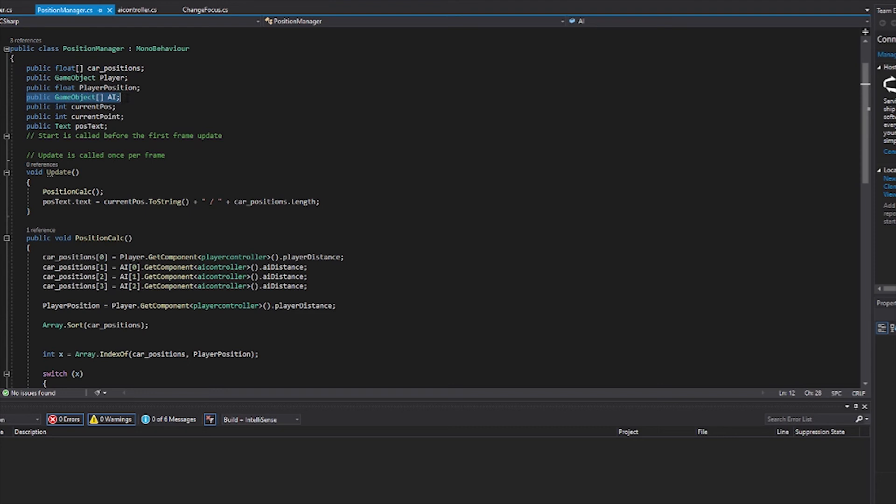An integer to track the current position value, an integer to track the active waypoint, and a text object to display the position.